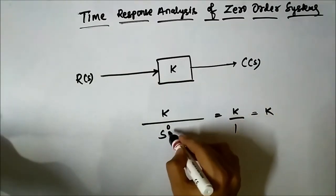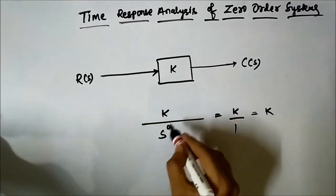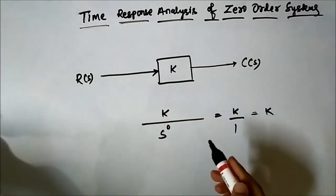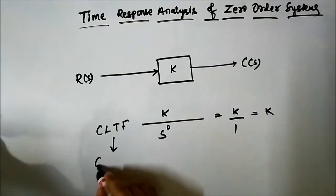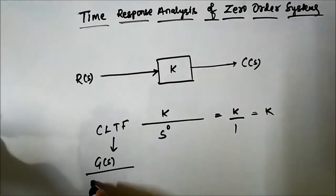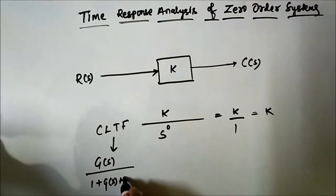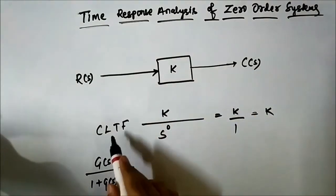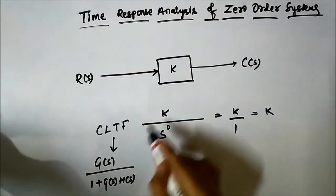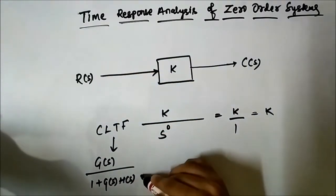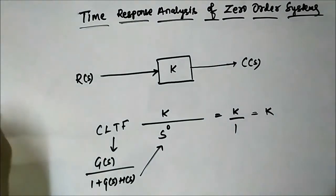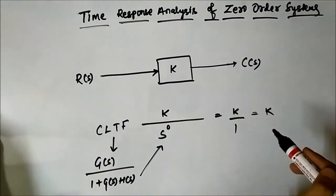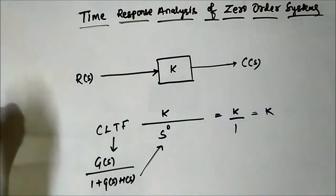Here the highest power of s in the denominator, which is the characteristic equation of the closed loop transfer function, is 0. So this is a zero order system. The closed loop transfer function is k divided by s to the power 0. This characteristic equation has the highest power of s equal to 0, which is why it is called a zero order system.